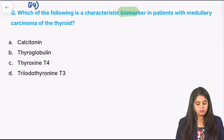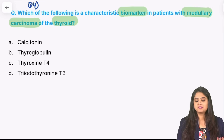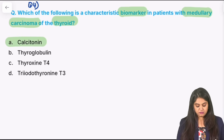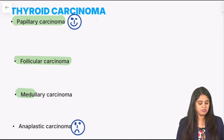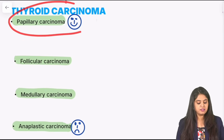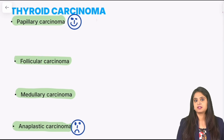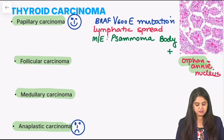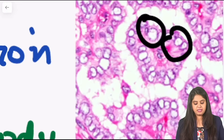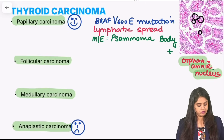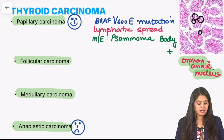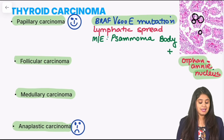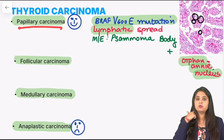Question four: what is the biomarker in medullary carcinoma of the thyroid? The answer is calcitonin. Here are quick buzzwords for every thyroid cancer. There are four types: papillary, follicular, medullary, and anaplastic. Papillary carcinoma has the best prognosis; anaplastic has the worst. For papillary carcinoma, the classical nucleus is the Orphan Annie nucleus — completely washed out. You also see Psammoma bodies in papillary carcinoma. The most common mutation is BRAF mutation, and it spreads via lymphatics, so lymph node enlargement is expected.